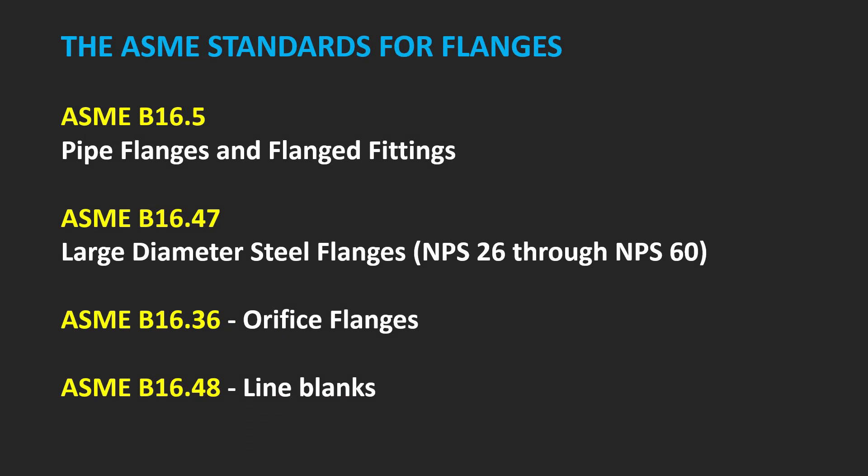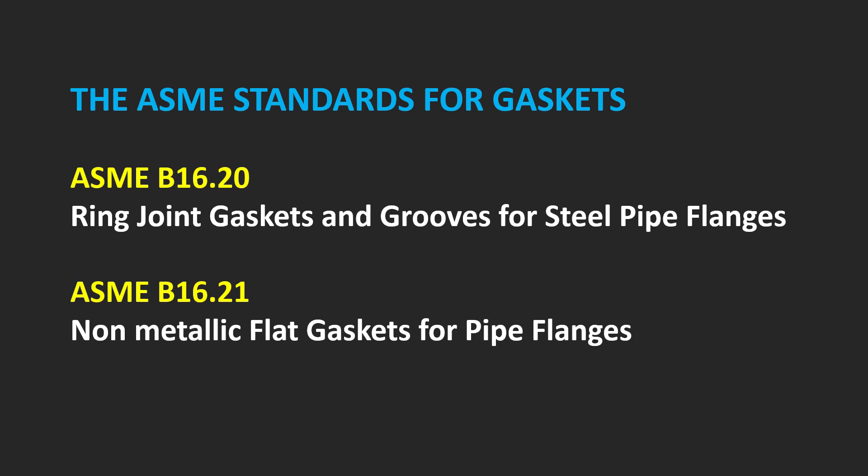ASME Standards for Flanges: ASME B16.5 covers pipe flanges and flange fittings. ASME B16.47 covers large diameter steel flanges. ASME B16.36 covers orifice flanges. ASME B16.48 covers line blanks. ASME Standards for Gaskets: ASME B16.20 covers ring joint gaskets and grooves for steel pipe flanges. ASME B16.21 covers non-metallic flat gaskets for pipe flanges.